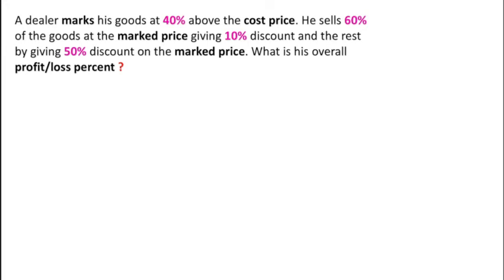Welcome to Definite Mind. This is an interesting question — I will give you two solutions. In the first solution I will give you a full method solution, and the other solution will be a tricky one, so watch this video till the end. In this question, a dealer marks his goods at 40% above the cost price. He sells 60% of the goods at the mark price giving 10% discount, and the rest by giving 50% discount on the mark price. What is his overall profit or loss percent?